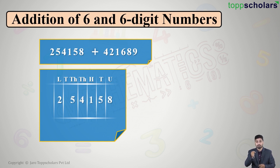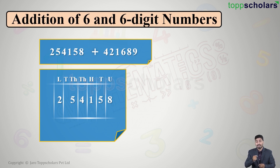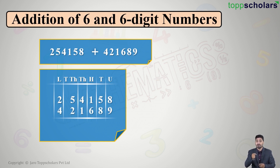So here we have written two lakh fifty four thousand one hundred and fifty eight, and similarly the second number four lakh twenty one thousand six hundred and eighty nine. Now we have to add these two numbers, so let us do the addition. We start from the units place.